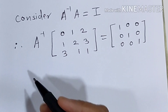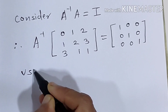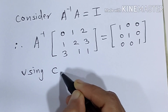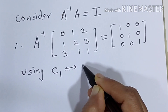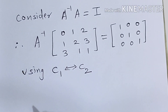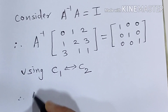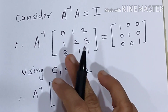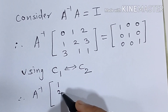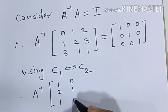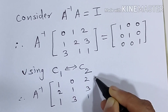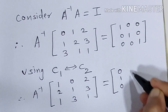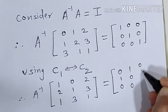The second column already has 1 here, so we can use the operation of interchanging the first column with the second column — C1 interchange with C2. After this interchange, the matrix becomes: first column 1 2 1, second column 0 1 3, third column 2 3 1. The same operation is applied to the right-hand side: 0 1 0 / 1 0 0 / 0 0 1.